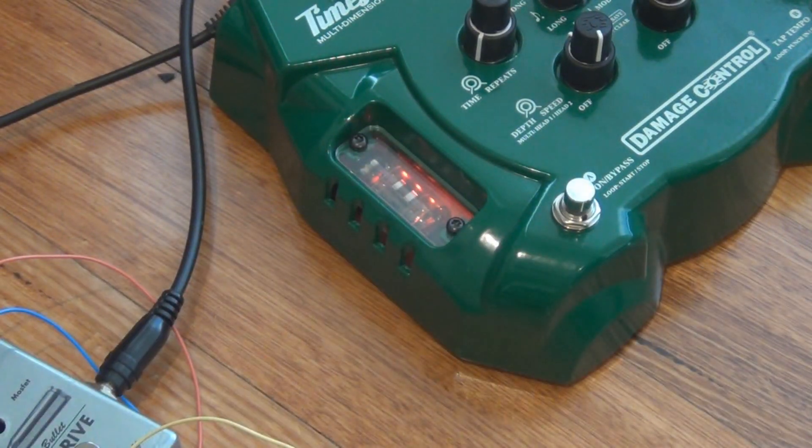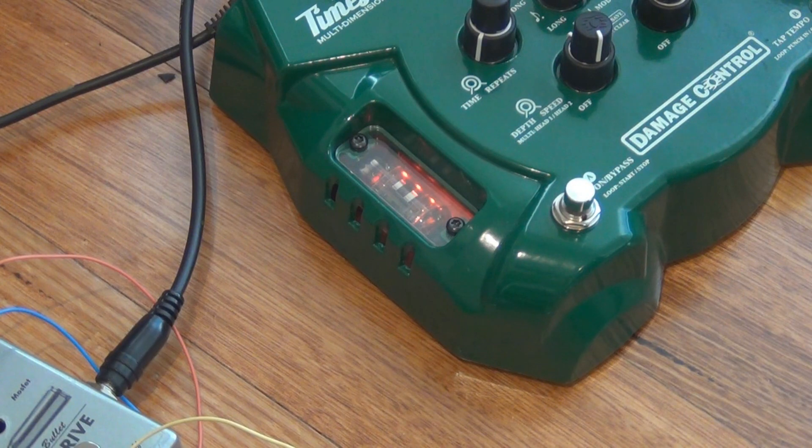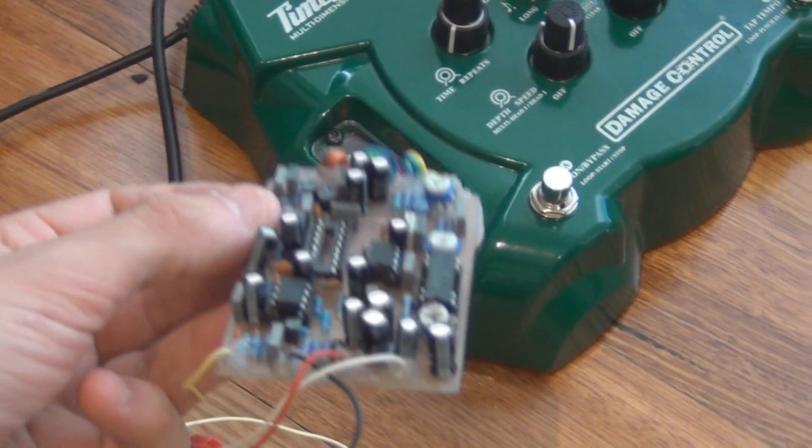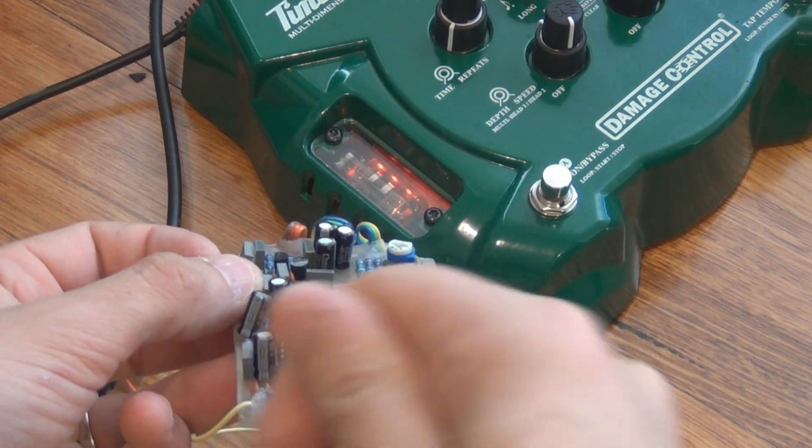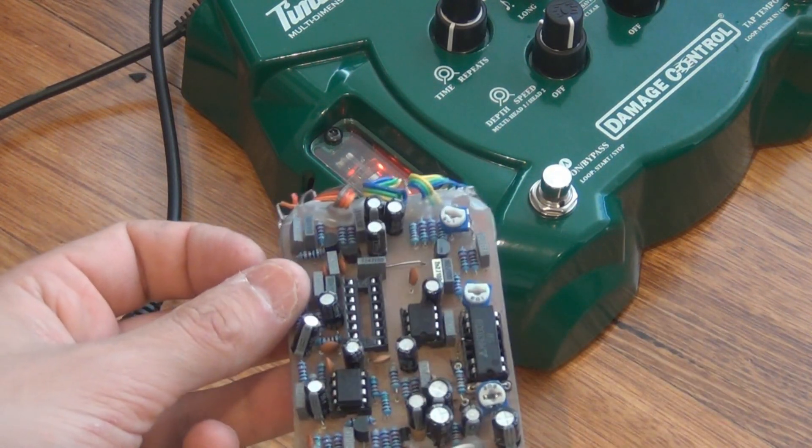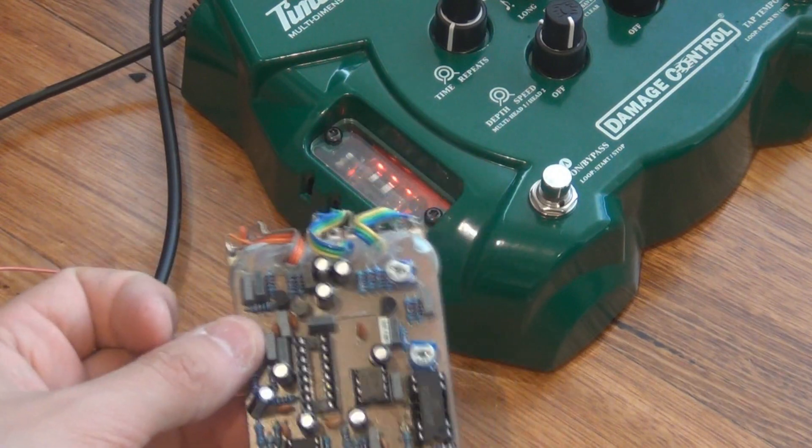The other way that you can do it if you don't have an IC extractor is to get a precision screwdriver and go in underneath and pop it up. That can also work quite well, but I find these are the best.